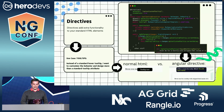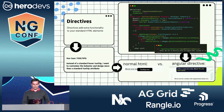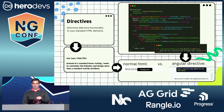That segues into directives. Directives add extra functionality to your standard HTML elements. An example is like a tooltip — you say tooltip equals, which is the normal HTML behavior. But Angular directives allow you to customize your HTML functionality, such as tooltips, mentions, language translations through HTML content-editable divs. You can do all of that through directives, and it's a very powerful tool.